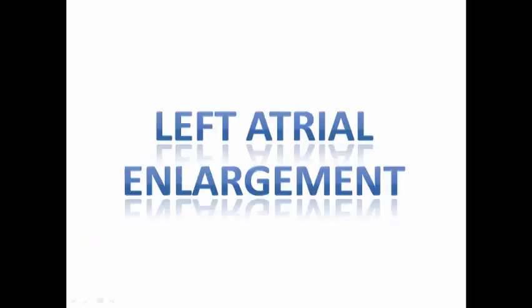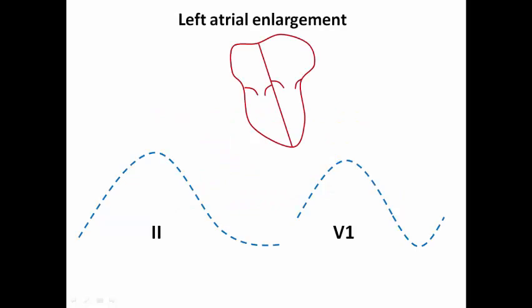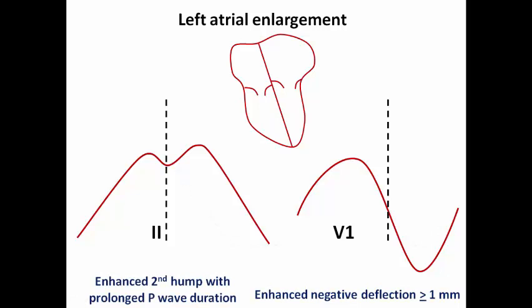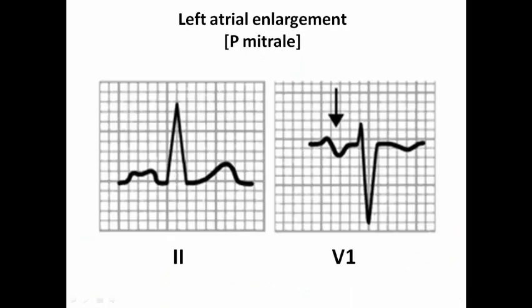Now let's discuss left atrial enlargement. The component of the P wave affected is the component corresponding to left atrial depolarization, not right atrial depolarization. In lead 2, the patient would have a pronounced second hump with prolonged P wave duration. In V1, there would be a pronounced negative deflection exceeding 1 mm — an accentuation of the normal V1 morphology. In the surface ECG example, lead 2 shows increased duration with a pronounced second hump, and V1 shows a pronounced negative deflection. This is called P mitrale, or left atrial enlargement.